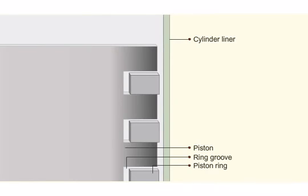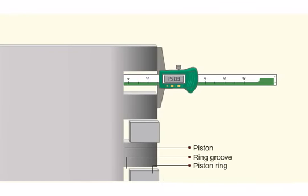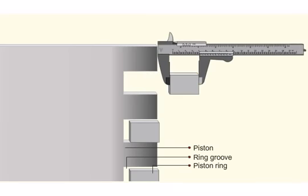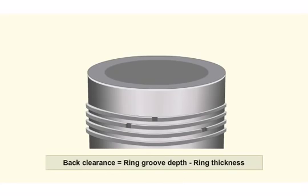To measure back clearance, measure the depth of the piston ring groove by means of the depth gauge. Use vernier caliper to measure the thickness of ring. Take both these measurements in at least six different positions around the groove circumference. The difference between the two readings will give the back clearance. If the back clearance is more than the specified limit, replace the rings.